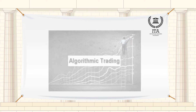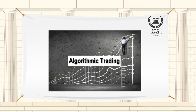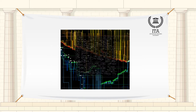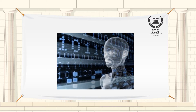An algorithm is a specific set of clearly defined instructions aimed to carry out a task or process. Algorithmic trading, also known as black box trading, is the process of using computers programmed to follow a defined set of instructions for placing a trade in order to generate profits at a speed and frequency that is impossible for a human trader.